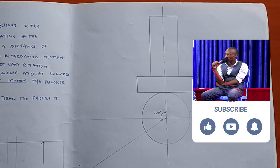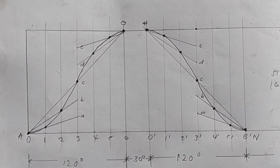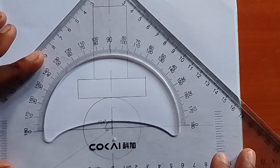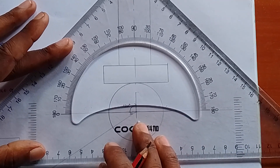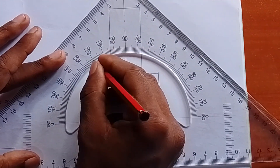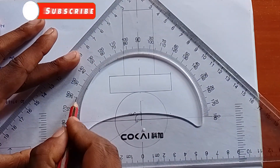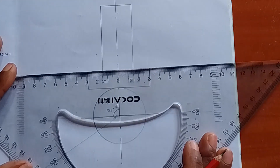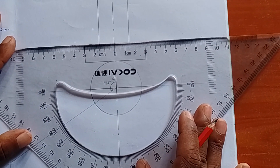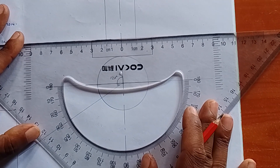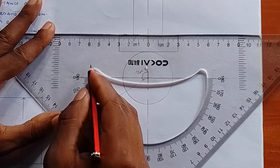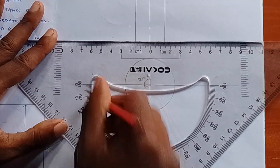This angle is 120 degrees, which represents the rise. We must divide it into six parts, because in our cam displacement diagram we divided it into six parts. So 120 degrees divided by six is 20 degrees apart. From this point, stand and measure each 20-degree interval, marking points along the 120-degree arc.